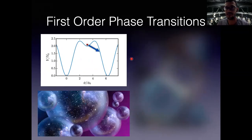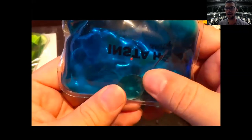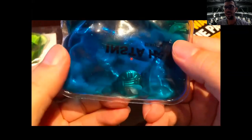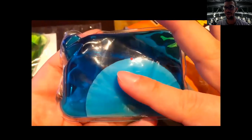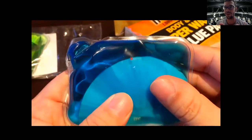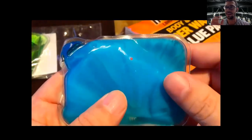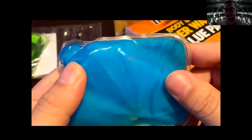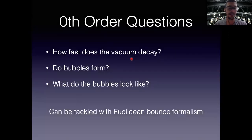These bubbles expand and eventually run into each other, completing the phase transition. Here's a real-world example where an external kick causes a bubble to form which then expands and swallows up the whole body. What I'm discussing is the analog where that transition happens because of quantum mechanics, not thermal fluctuations or external perturbations.